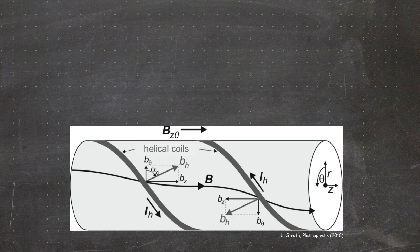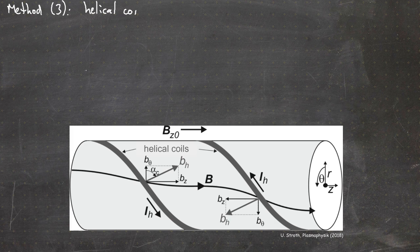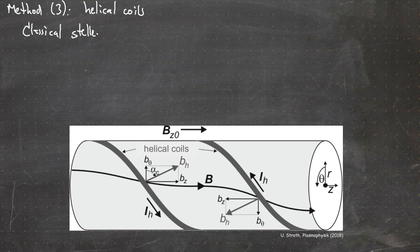Now let's talk about method three, which uses helical coils. In a classical stellarator we have the current in the helical coils flowing in alternating directions. Looking at the drawing on the bottom, there are two coils: one with current flowing in one direction and the other anti-parallel to that. The figure shows an n equals one, one-period linear stellarator.